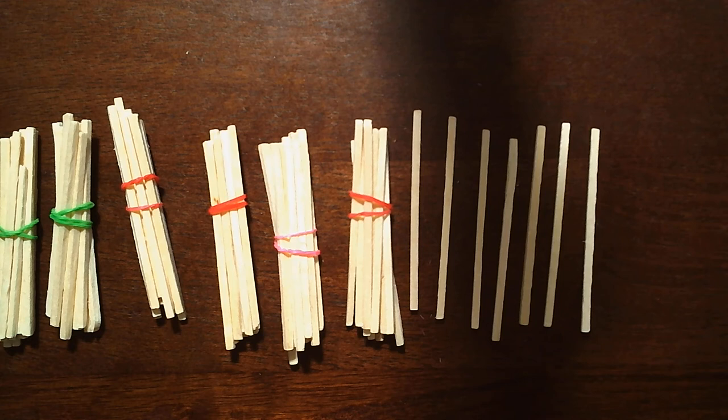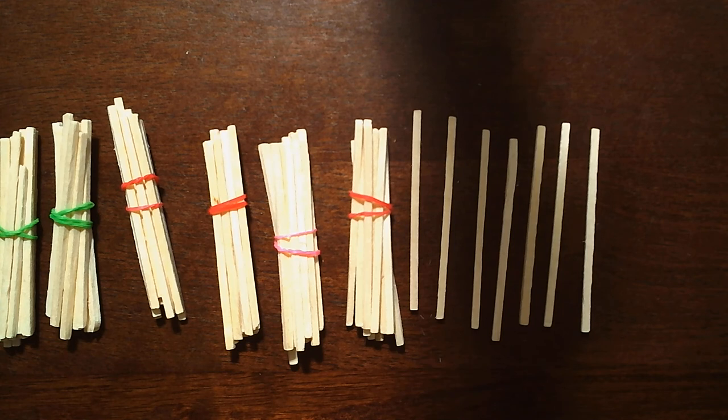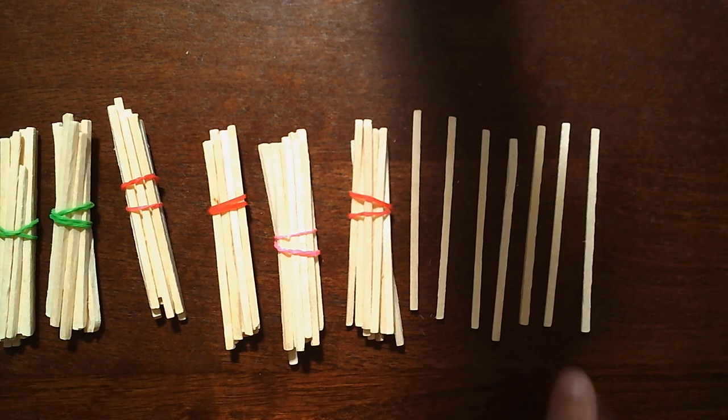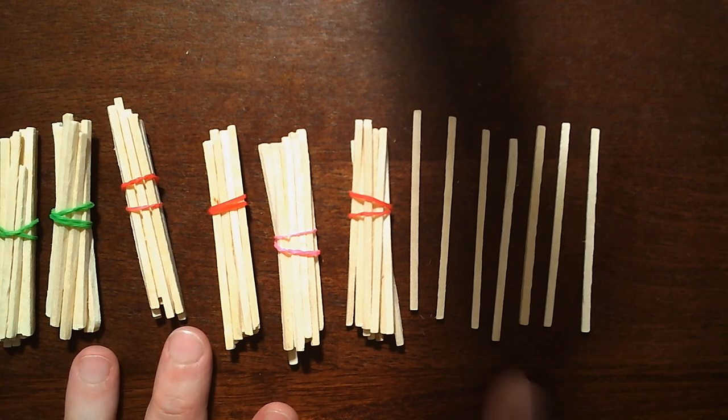So we have some tens and some ones. These are our tens, the bundles. These are our ones, the single sticks. So how many do we have all together in tens and ones? Let's count our bundles first, our tens. One, two, three, four, five, six. If we have six tens, how many do we have? Sixty, right? Then we have one, two, three, four, five, six, seven ones, which equals seven. So sixty-seven.